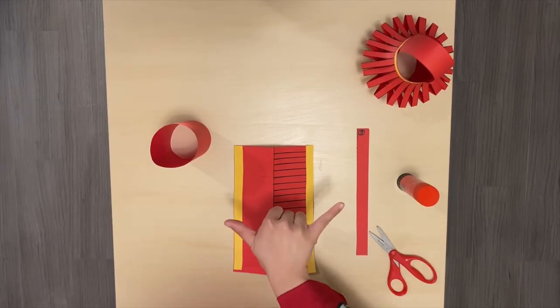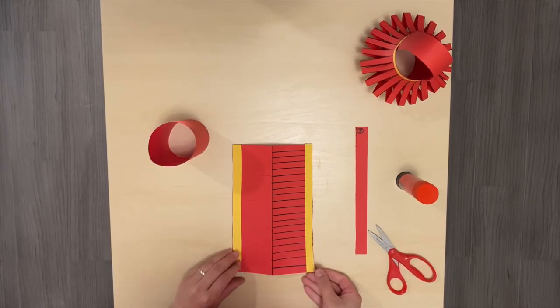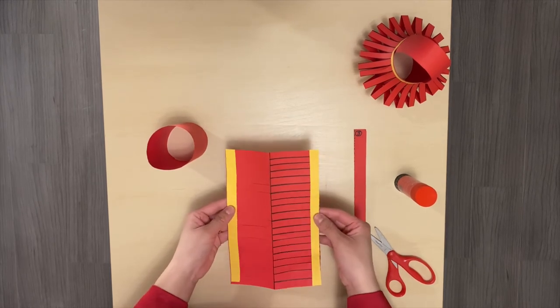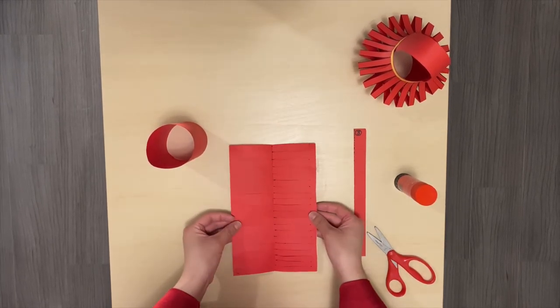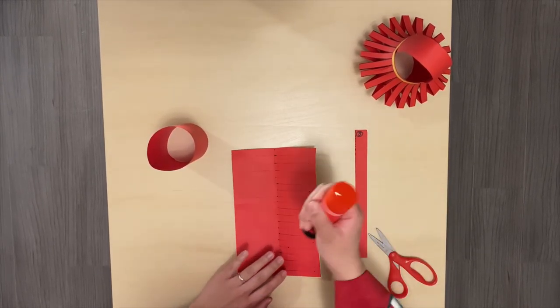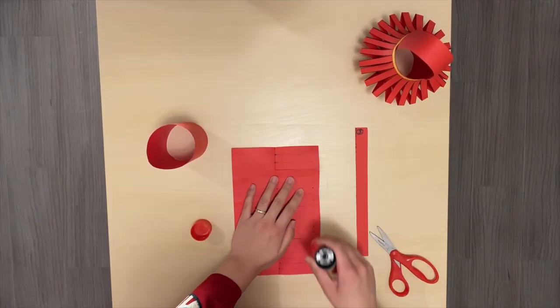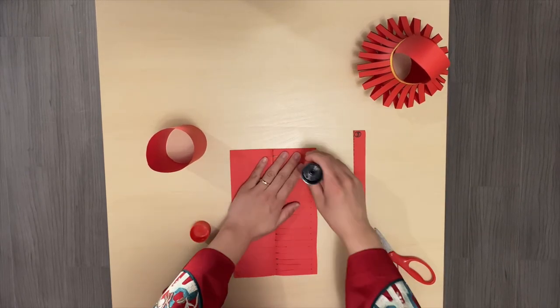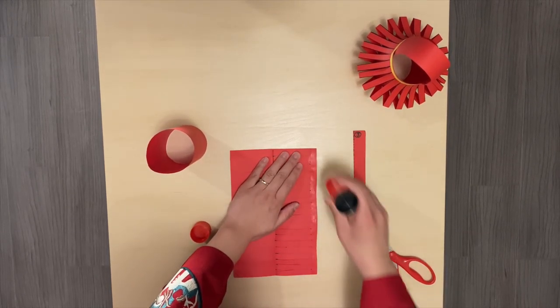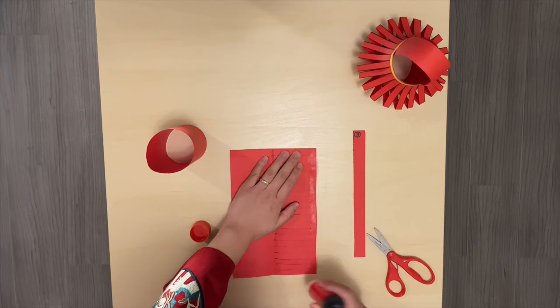Step number six. You're going to pick up your paper number one, flip it, and then pick up your glue stick. You're going to apply glue on both edges of your paper from top to bottom. Make sure you have enough glue on both sides.